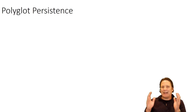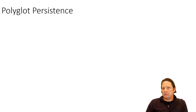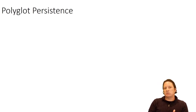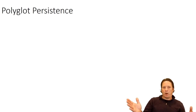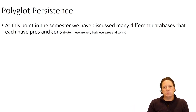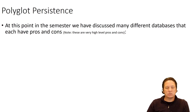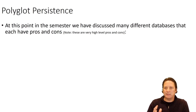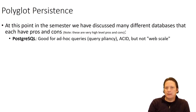Polyglot persistence is the same idea: there's no one database management system — not even one genre of database management system — that's going to be the best at solving all problems. So maybe we need to take our big problem and split it up into smaller problems, and solve each one with the tool that makes the most sense. At this point we've talked about these seven different databases in five different genres, and we said each of these databases has their pros and cons.